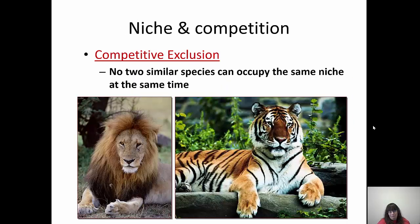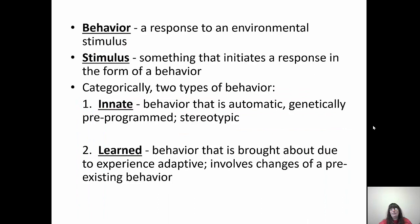The theory of competitive exclusion states that no two similar species can occupy the same niche at the same time. Tigers and lions are too similar — their competition would basically cause both to go extinct, which is why they don't live in the same area. Behavior is a response to an environmental stimulus; a stimulus is something that initiates a response. There are two types of behavior: innate behavior, which we are born with — genetically pre-programmed, automatic, and stereotypic — and learned behavior, which is brought about by experience, is adaptive, and involves changes to pre-existing behavior.